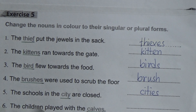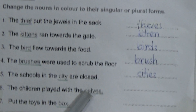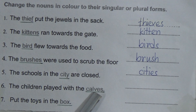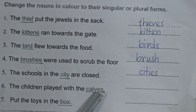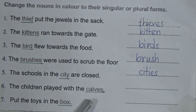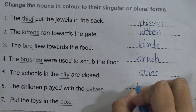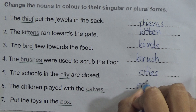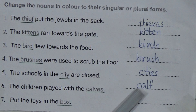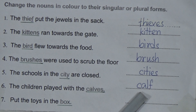Number six: the children played with the _calves_ — that means the baby cow. Look at this word calves — C-A-L-V-E-S. We see VES at the end, which means to make it singular we drop VES and add F. So the singular form of calves is calf — C-A-L-F. To make it plural again, we drop F and add VES.